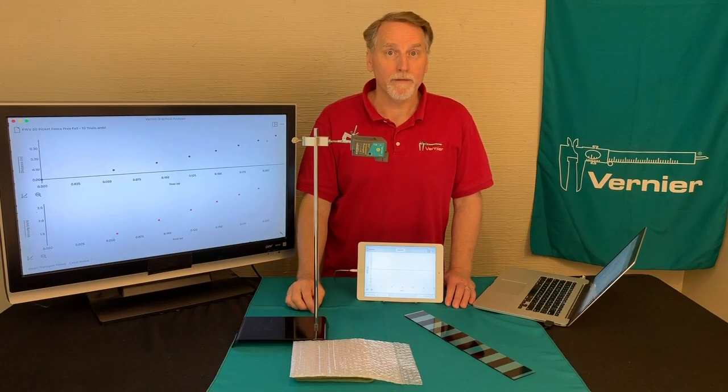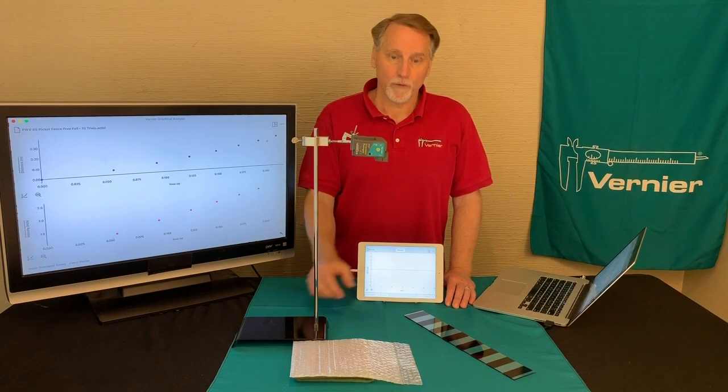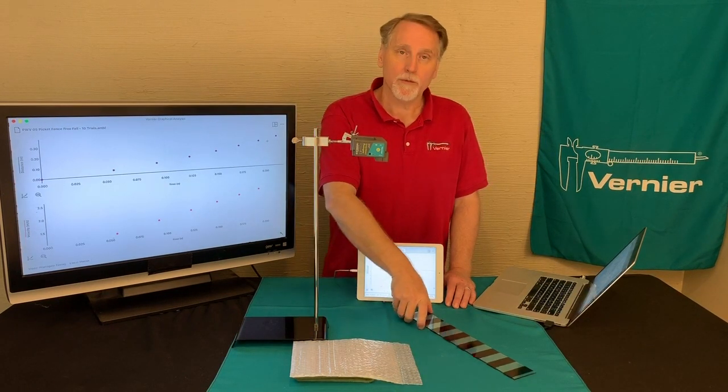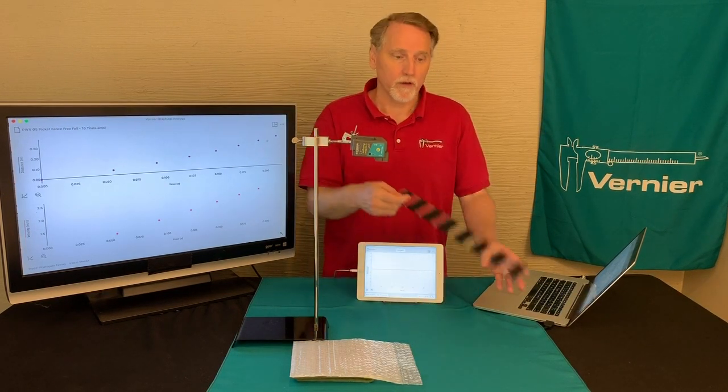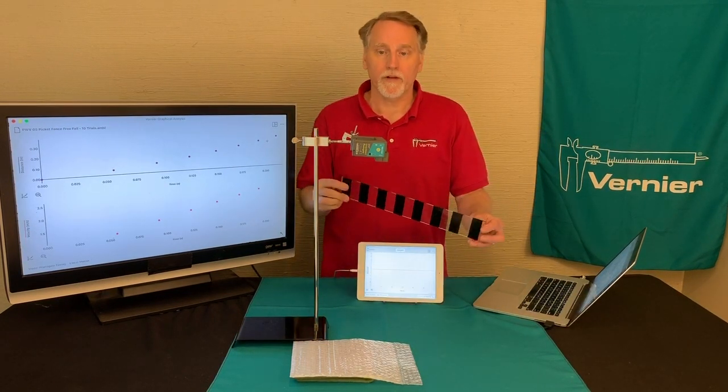Photogates, like this one, can be used to measure the movement of an object. In this case, we're going to be looking at an object in free fall, and it's this picket fence.